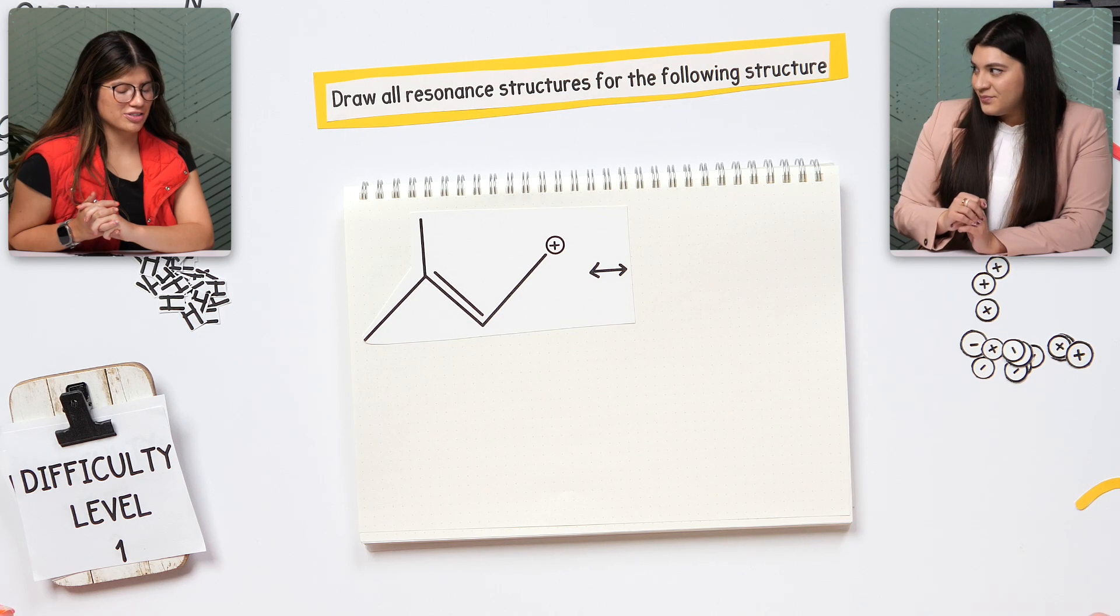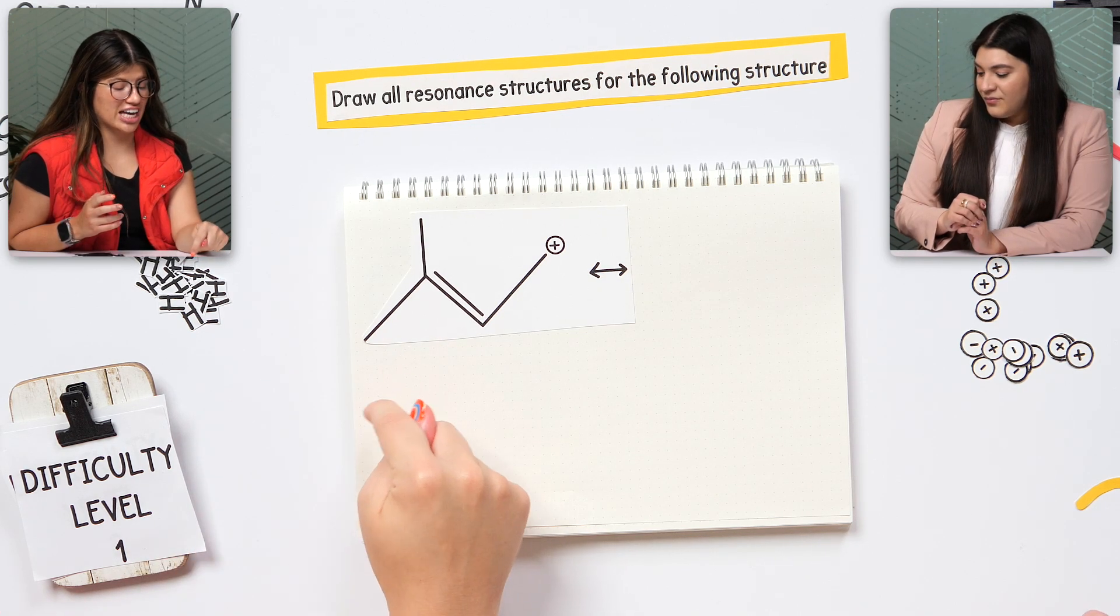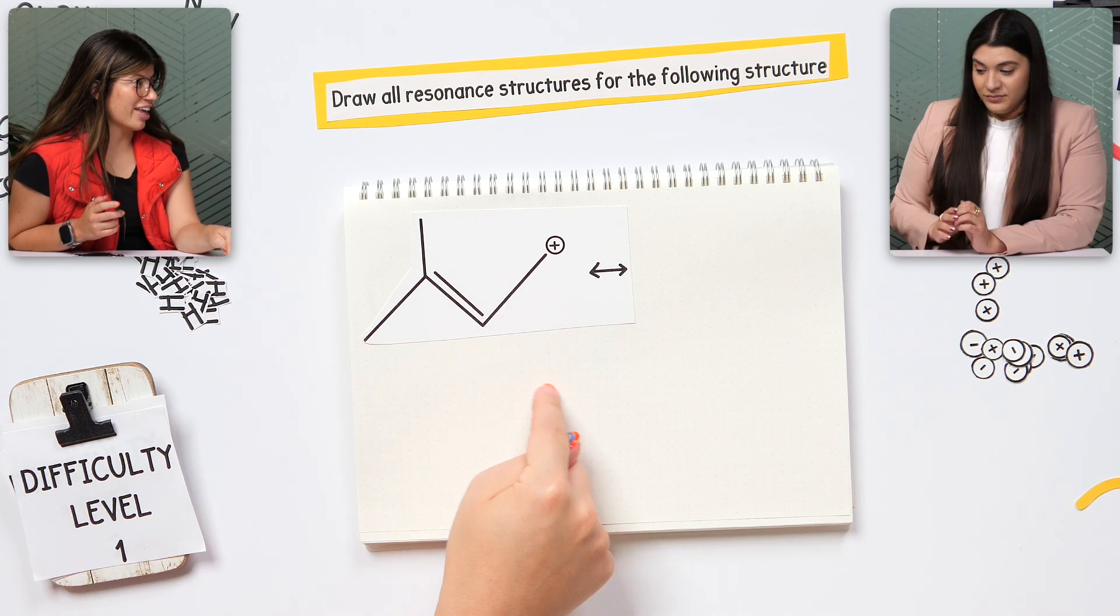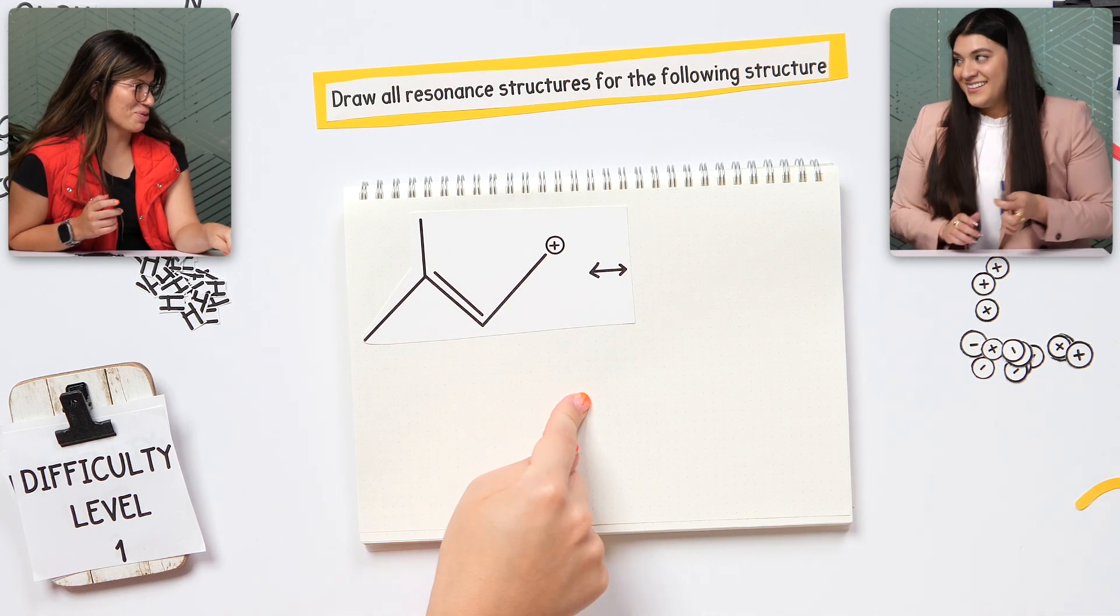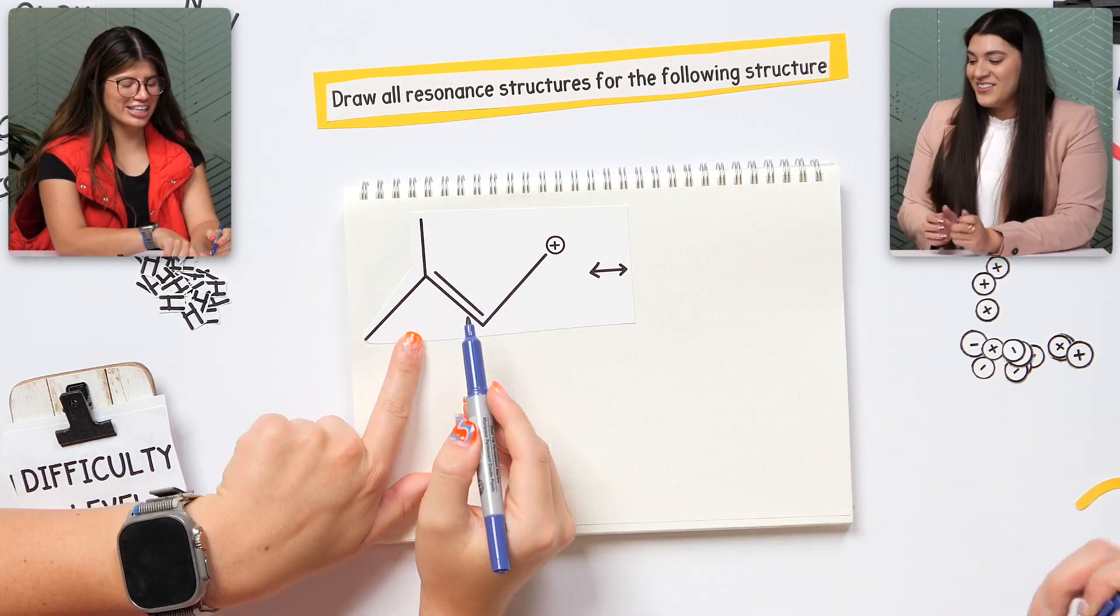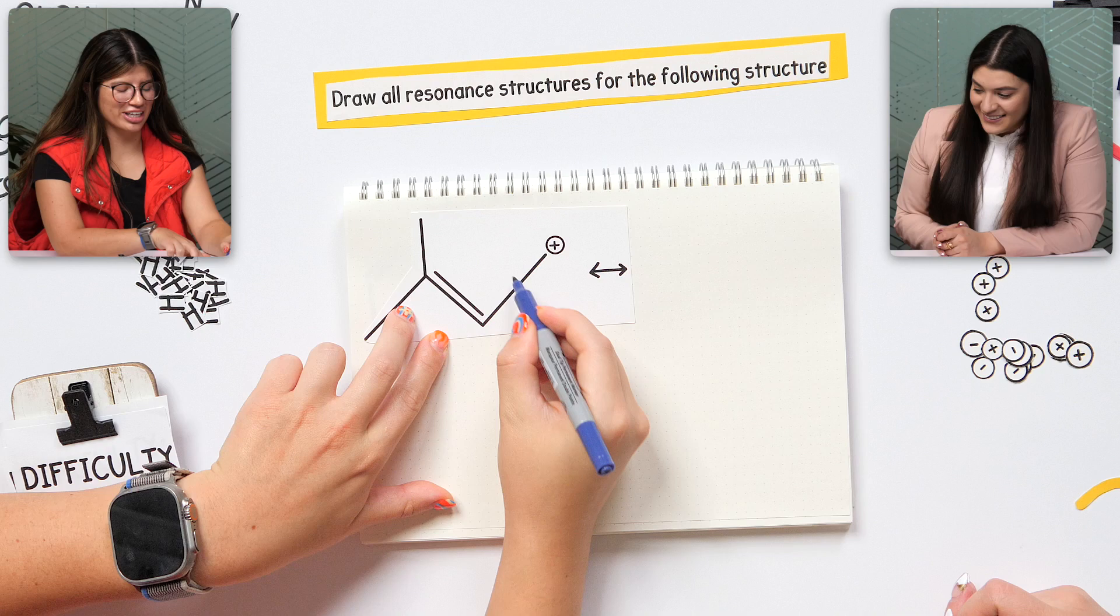How do we draw the resonance structure? You would have the tail of the arrow pointing to what's being moved and then the head of the arrow pointing to where it's going to be formed. I would say it would move from here to here.